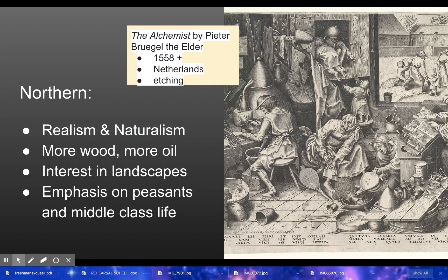Let's look at Northern art. They had many of the characteristics we discussed earlier — realism, but also naturalism, with a lot more of nature in Northern Renaissance art. More of the work is done on wood, and they used more oil paints as opposed to Italian frescoes. They had an interest in landscapes. They also didn't just focus on saints and aristocrats — there was also an emphasis on peasants and middle-class life. As you see here, an etching — which literally means it's carved into wood — by Pieter Bruegel the Elder, done in the mid-1500s in the Netherlands.